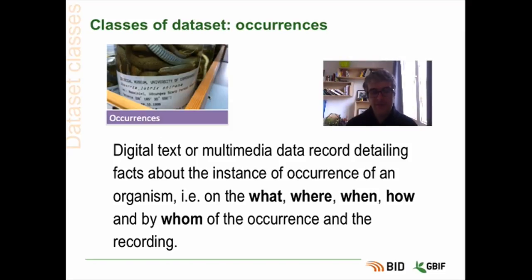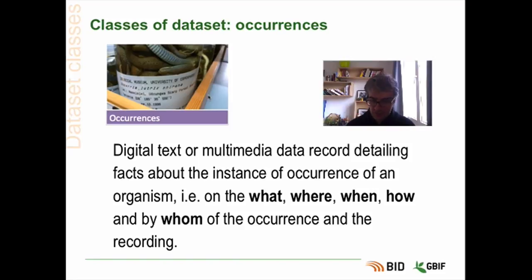The first category of data that you can publish at GBIF is occurrences. It's also the most common data type currently at GBIF. It's basically data describing the fact that a given individual was present at a specific time and place. We can take an example: an ichthyologist named Johnson observed an occurrence of the species Betta splendens in a specific lake in Thailand on February 8, 1981. We can really see that we are describing the occurrence of a given organism at one place in space and time.